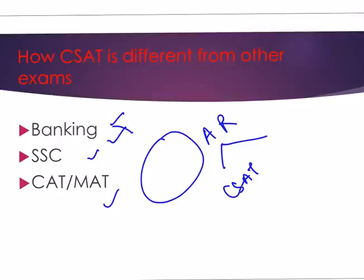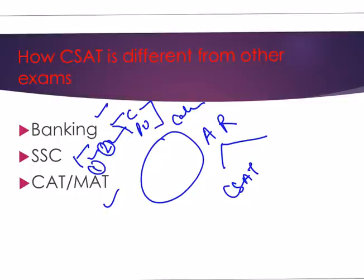In banking exams there are two types: clerk and PO. The questions asked in banking exams are totally based on calculation — calculations need to be very good and very fast. In SSC there are level one and level two exams, and although some topics match CSAT, the standard, level, and the way questions are asked is totally different from SSC, CAT, and MAT papers.